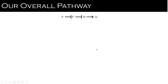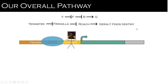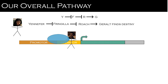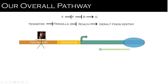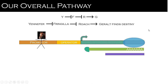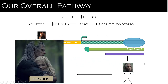So this is our overall pathway: Yennefer blocks Fringilla, who blocks Roche, who promotes Geralt — so Geralt can find his destiny. In the animation, Fringilla acts as the repressor so RNA polymerase can't get through. But if Yennefer is present, she removes Fringilla, and Roche acts as an activator. RNA polymerase can then transcribe and translate the protein that creates Geralt, and Geralt can ride Roach to find his destiny in the form of Ciri. So everyone is happy.